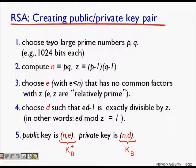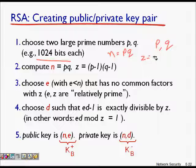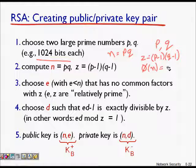Here are the steps for RSA. First, choose two very large prime numbers p and q — usually 1024 bits each. Compute n = p × q. Also compute z = (p−1)(q−1), which comes from Euler's totient function: φ(n) = (p−1)(q−1).